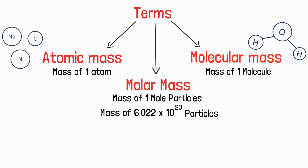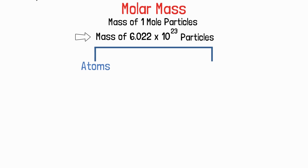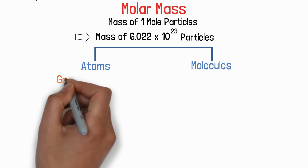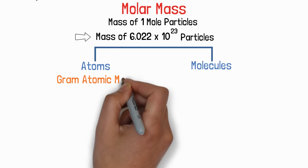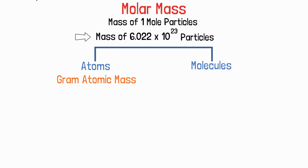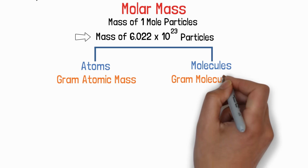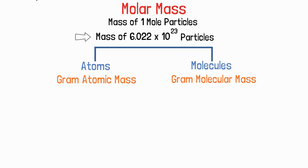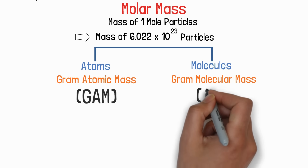Atomic and molecular mass refer to the mass of one particle, while molar mass refers to the mass of 6.022 × 10²³ particles. If we talk about 6.022 × 10²³ atoms, we call this gram atomic mass. If we talk about 6.022 × 10²³ molecules, it will be gram molecular mass. So molar mass has two categories: first, gram atomic mass, abbreviated as GAM, and second, gram molecular mass, abbreviated as GMM.